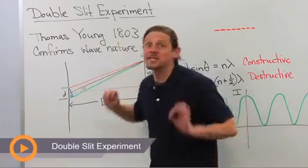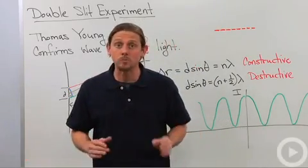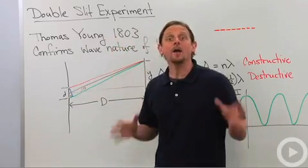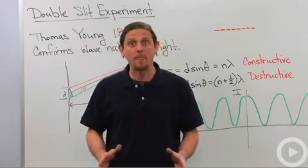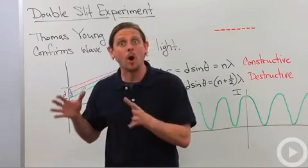So let's talk about the double-slit experiment. This is an extremely important experiment that was first performed by Thomas Young in 1803, and it was the first experiment that gave conclusive evidence that light behaves as a wave.